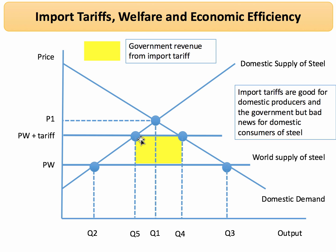We added on a tariff shown here by the vertical upward movement to the world price. That increases domestic supply and causes domestic demand to contract, so imports contract to Q4-Q5. The yellow area shows the government revenue from the import tariff. Now in the next couple of minutes we're going to think about the consequences for welfare and efficiency, because this is one of the key aspects whenever you get a question on protectionism, trade barriers, or tariffs.